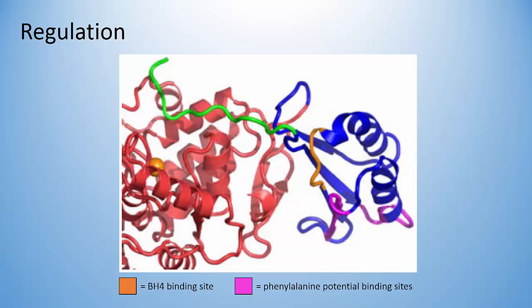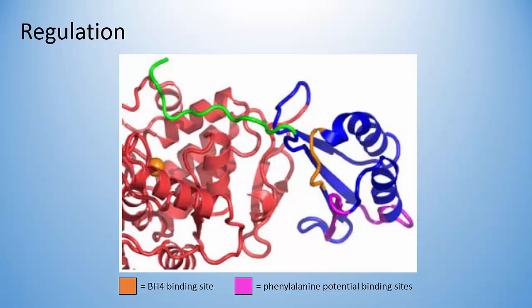The enzyme is regulated in three different ways: through allosteric regulation by both BH4 and phenylalanine, and by phosphorylation. BH4 can bind at the orange region on the regulatory domain, causing a conformational change that down-regulates catalytic activity. Phenylalanine can bind at one of the purple regions, which increases catalytic activity through a conformational change and promotes removal of BH4 from its allosteric site. This feedback system works well to promote removal of excess phenylalanine.